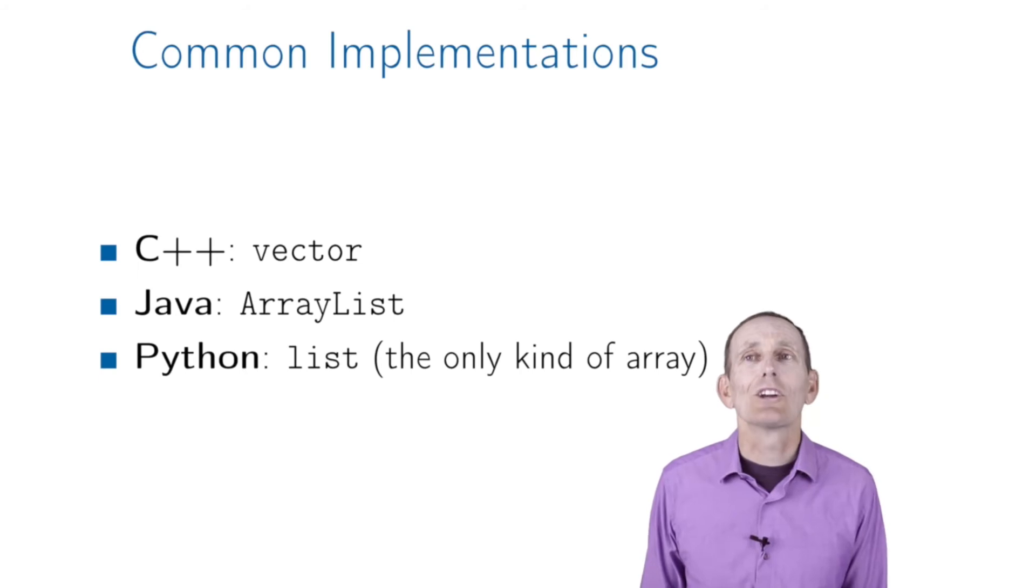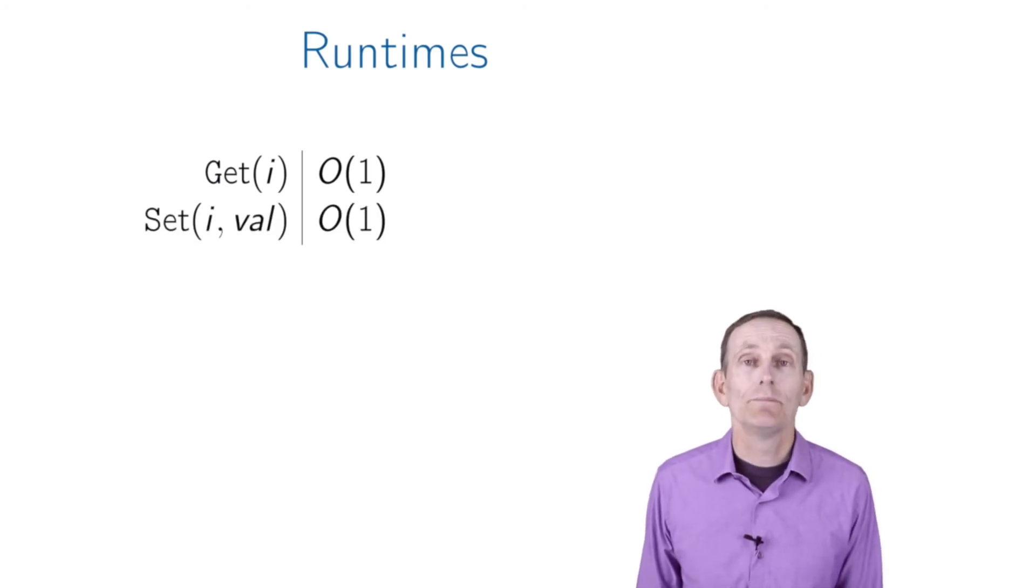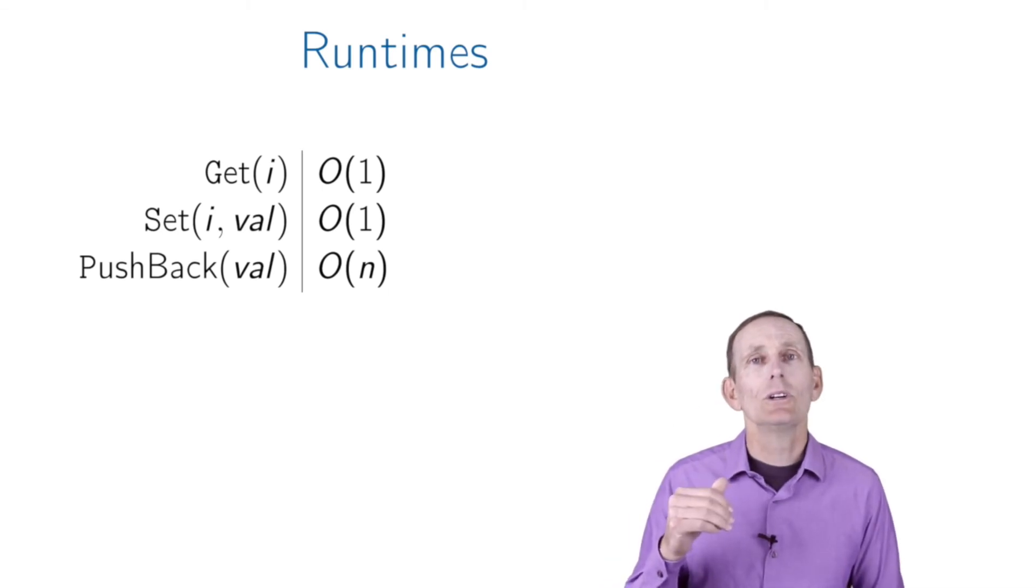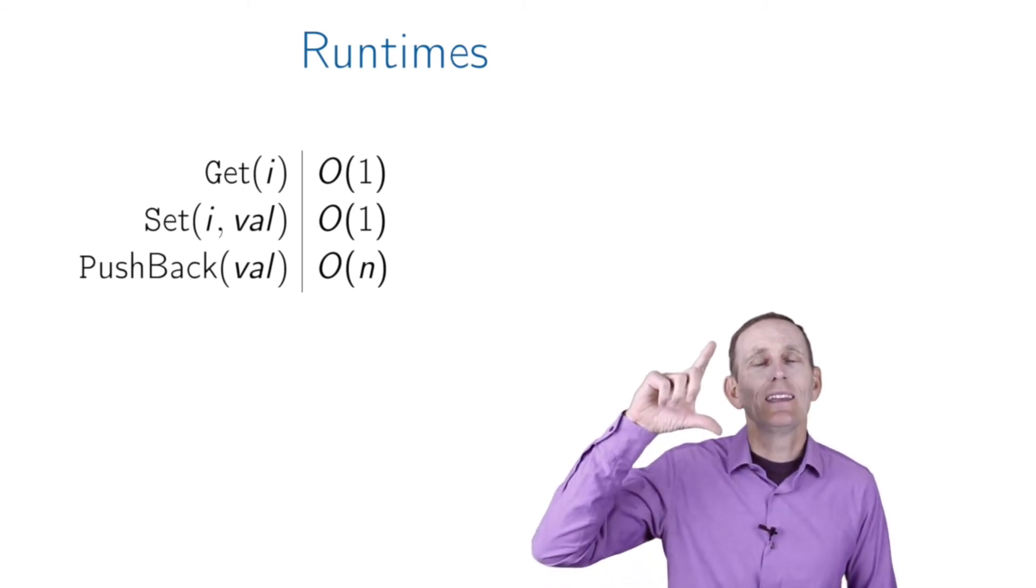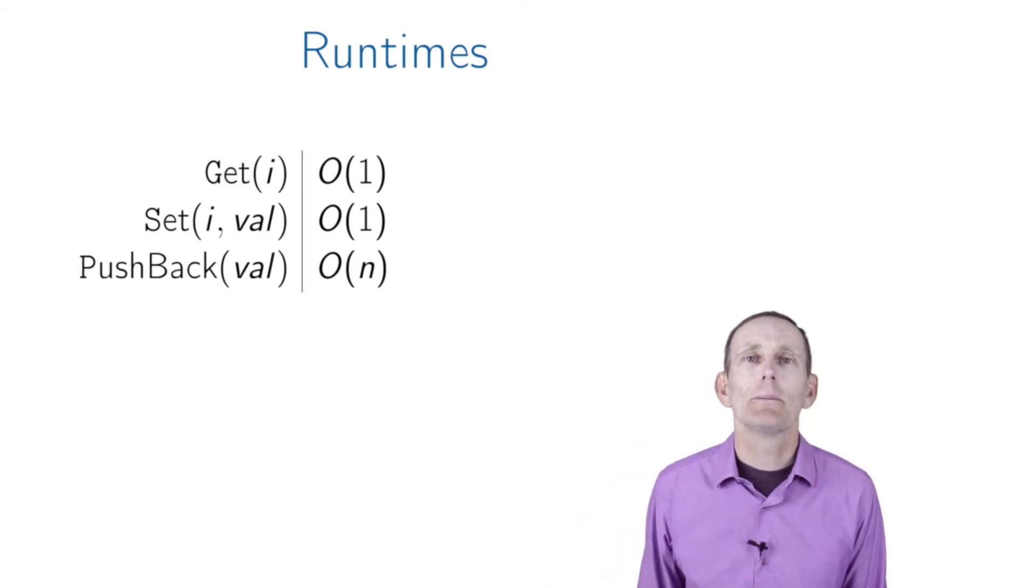There are no static arrays in Python - all of them are dynamic. What's the runtime? We saw get and set are O(1), as they should be. Pushback is O(n), although we're going to see that that's only the worst case, and most of the time when you call pushback, it's not having to do the expensive operation.